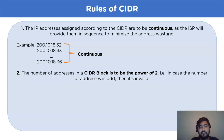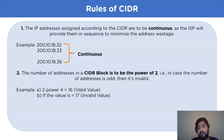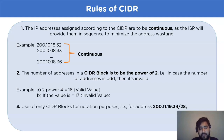The next rule is that the number of addresses in a CIDR block must be a power of 2. If the number of addresses is odd, then it is an invalid value. For example, 2 to the power of 4 equals 16, where 4 represents the number of host bits. However, if the value is 17, then it is invalid.